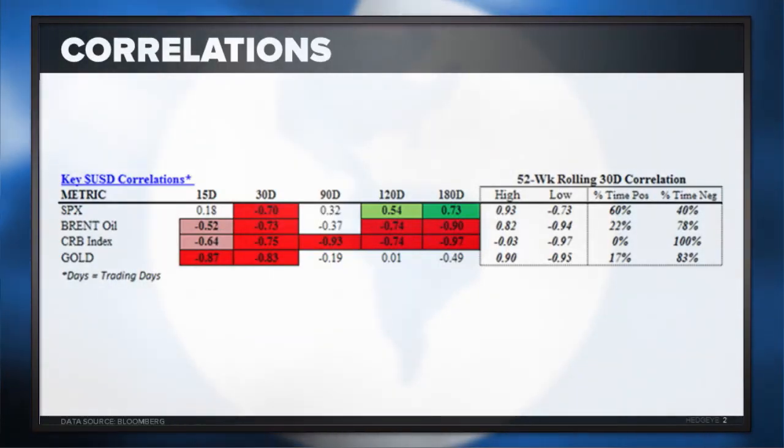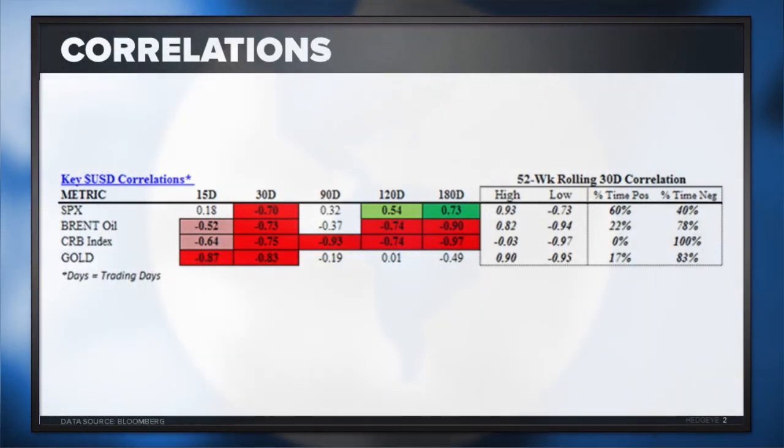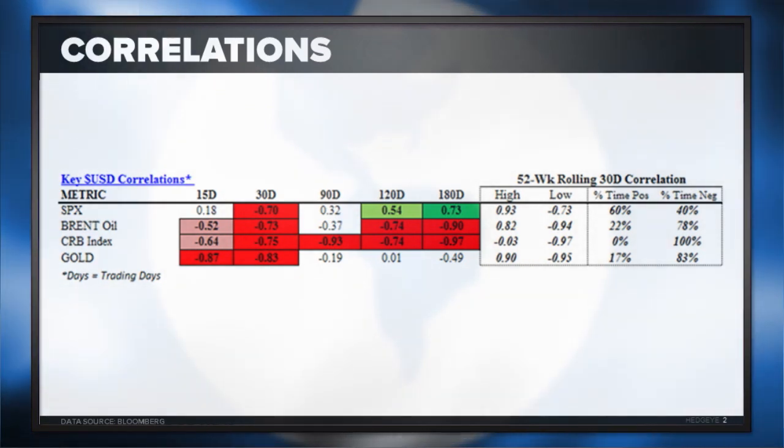Let's kick the tires on what a potential dollar reversal means for U.S. stocks. From an intermediate term perspective, looking at the correlation math, the correlation between the U.S. dollar index and the S&P 500 index is positive 0.73. That's signaling that from an intermediate to long term perspective, U.S. growth expectations need to stabilize and strengthen for the market to go higher.